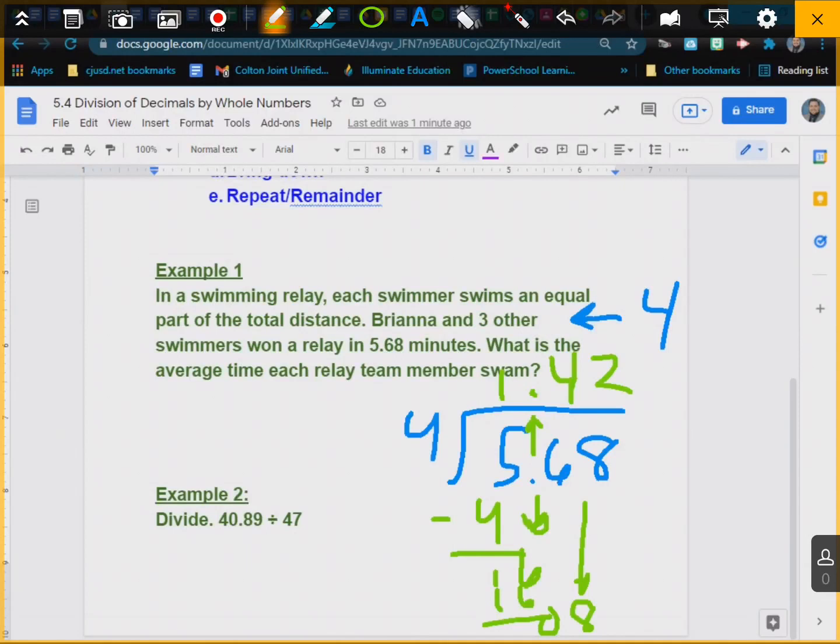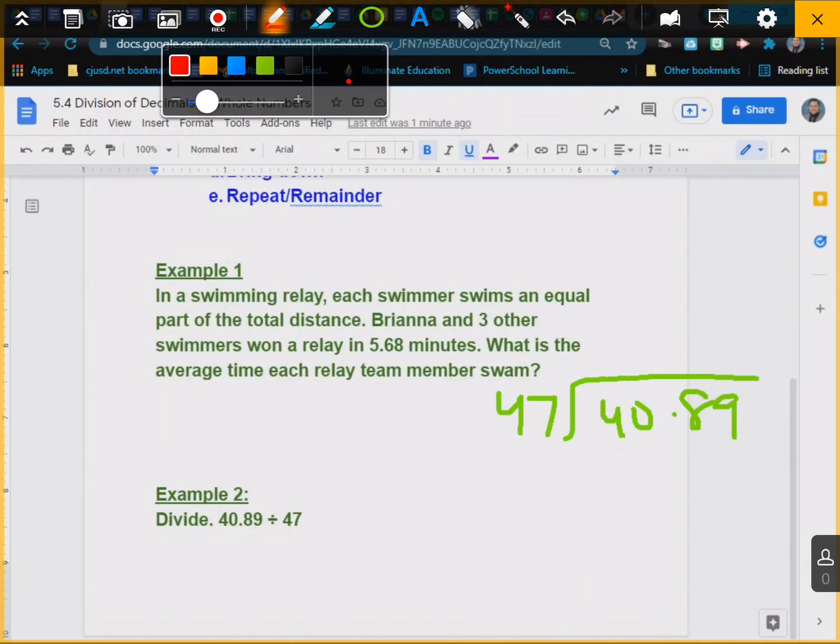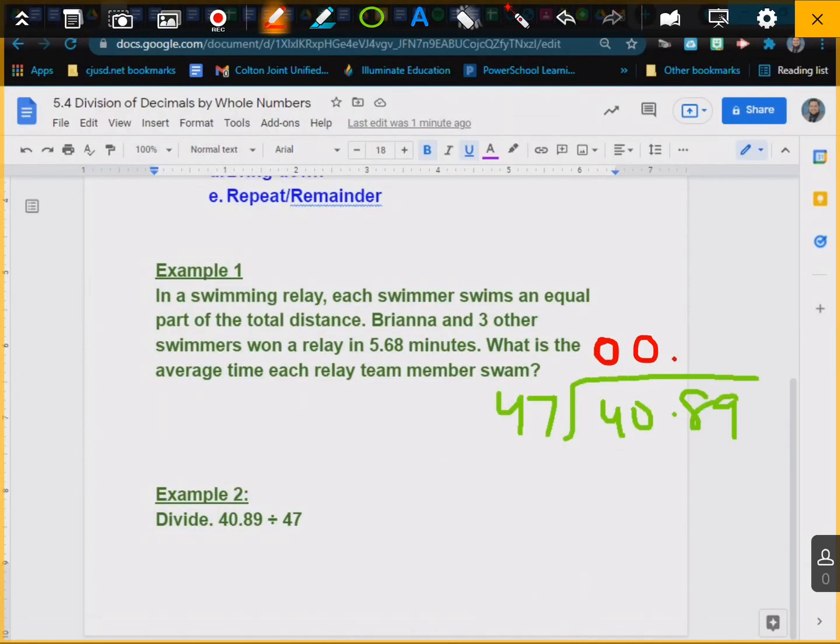Okay, let's go ahead and let's do example number two. I have 40.89 divided by 47. So I'm going to put the decimal right above. 47 does not go into 4, and it doesn't go into 40, so we have to look at 408.